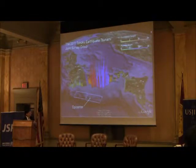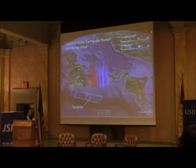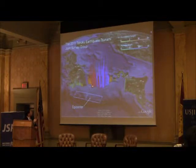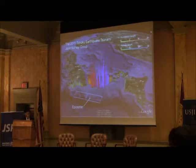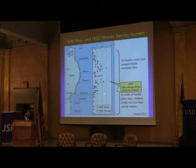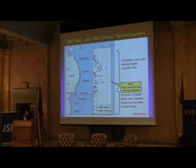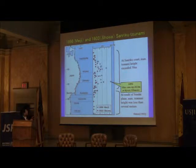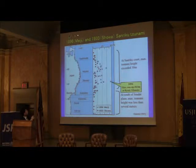A very high tsunami attacked the Pacific side, especially the Sanriku region and the Miyagi region — more than 10 meters was recorded. This region is frequently attacked by tsunami. The most famous one is the 1896 Meiji Sanriku tsunami. This time also more than 20,000 people were killed by this earthquake.